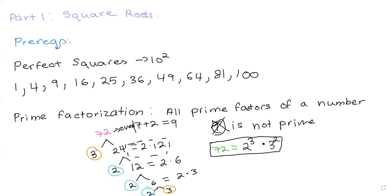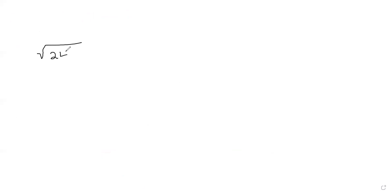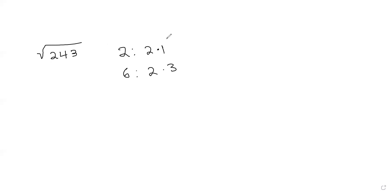Now let's go over the actual content of square roots. Let's say I have the square root of 243 and I want to simplify this. When you have a radical, we can rewrite a number using multiplication. When simplifying radicals, we get introduced to rewriting a number with squares, which helps you see the number in its simplest form. It also helps you add and subtract radicals, which will be covered in a different video.